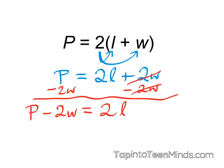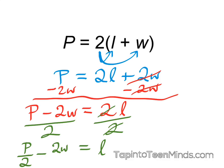And finally, our last step would be to divide out 2 from both sides, and we are left with l equals p minus 2w over 2, or p over 2 minus 2w over 2.